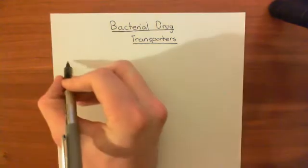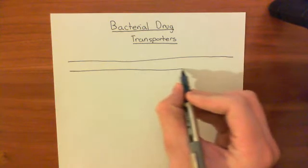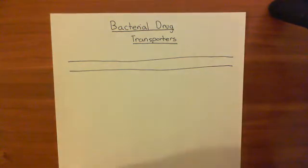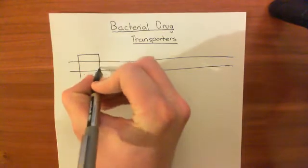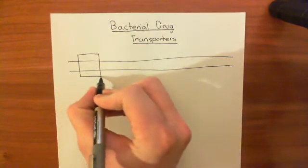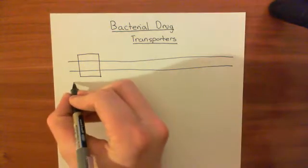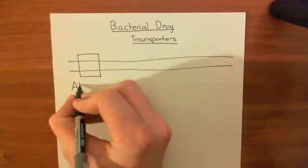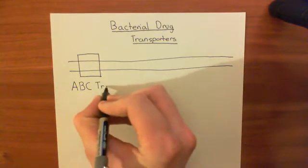We'll draw out the five major families of bacterial drug transporters in our membrane here. So this is our phospholipid bilayer that surrounds our bacterial cell. The first type of bacterial drug transporter — we're just going to introduce their names for now — these first ones are known as ABC transporters.